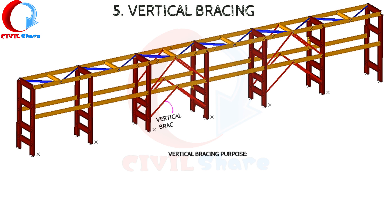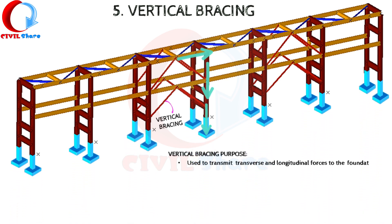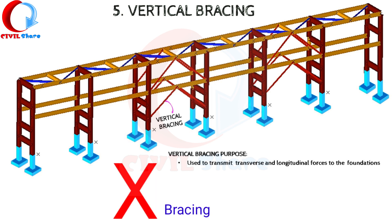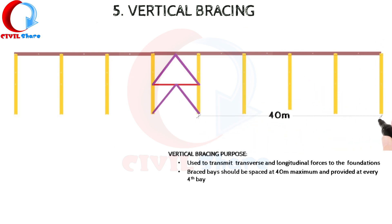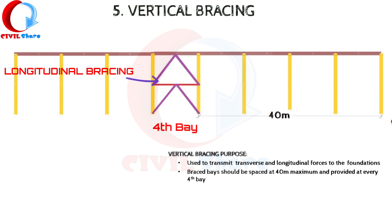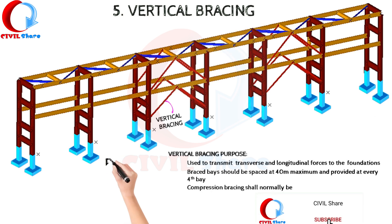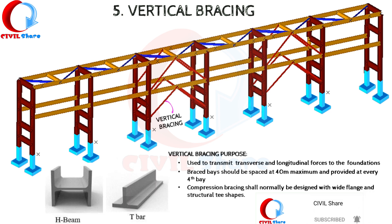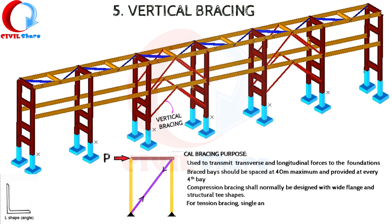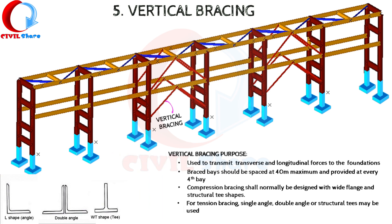Vertical bracing may be used to transmit transverse and longitudinal forces to the foundations. K-bracing or X-bracing is usually used for this purpose. Braced bays in strutted pipe rack systems should be spaced at 40 meters maximum, and longitudinal bracing should be provided in about every fourth bay. Compression bracing for steel pipe rack systems shall normally be designed with wide flange and structural T shapes. For tension bracing, single angle, double angle, or structural T's may be used.